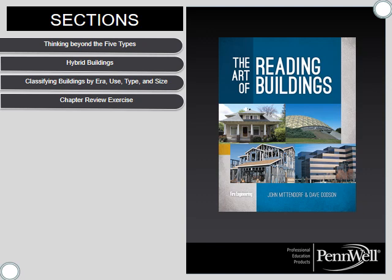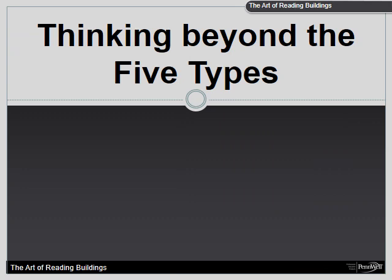Your review exercise is going to be about using pictures at the end of the exercise. As stated in Chapter 4, there are buildings that combine multiple NFPA types in a single building, and there are buildings that don't really fall into any of the classic five types. From a firefighting perspective, when that happens we're going to use the term hybrid to label these buildings. To truly get a good read on a building, the officer must further classify the building not only by the type of construction but by what era it was constructed in, its occupancy, and of course the size of the building.